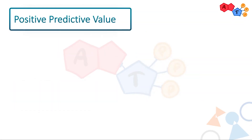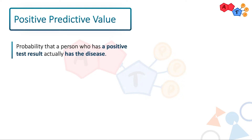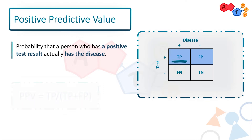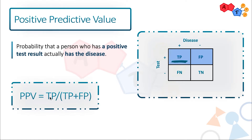Positive predictive value is the exact opposite. It is the probability that a person who has a positive test result actually has the disease. Who has a positive test result? All of these: true positives and false positives. But we're only interested in those who actually have the disease. So it's true positive over true positive plus false positive — just remember it as all the positives. And remember, the definition is very important.